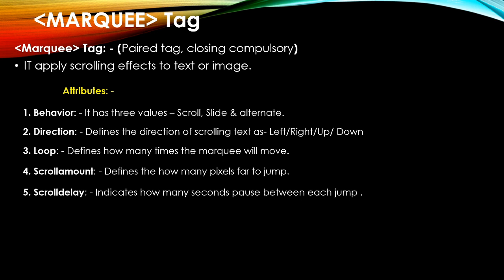The scrolldelay attribute indicates the pause in milliseconds between each jump. When the marquee text jumps from one point to another, it waits for a few milliseconds before the next jump — that pause is defined by scrolldelay. The default value is 85 milliseconds. You can assign a value from 60 milliseconds or higher. This also controls the speed of the marquee.